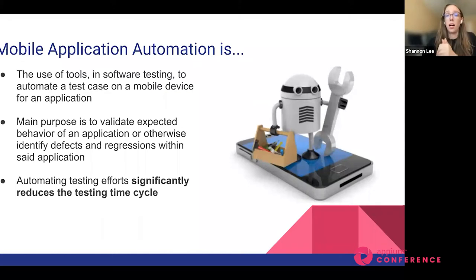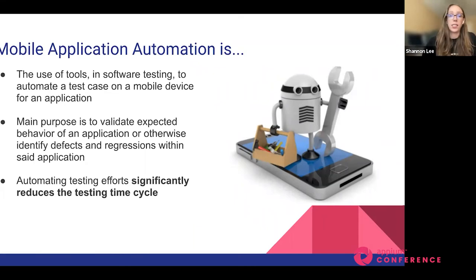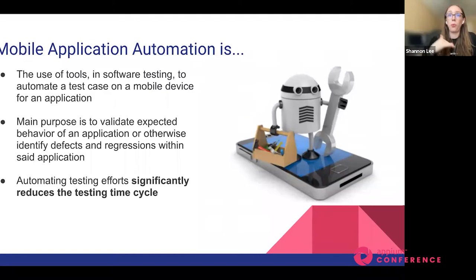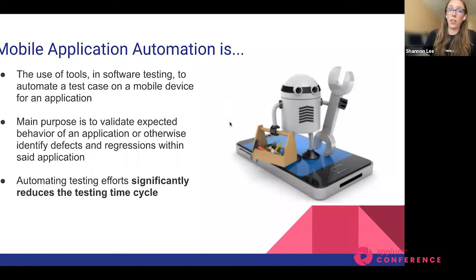Otherwise, log and identify defects and regressions within your application. By automating your test cases, this significantly reduces the testing time cycle. If you have your regression suites automated, your regression cycle time will reduce significantly thanks to automating your test cases for your mobile application.